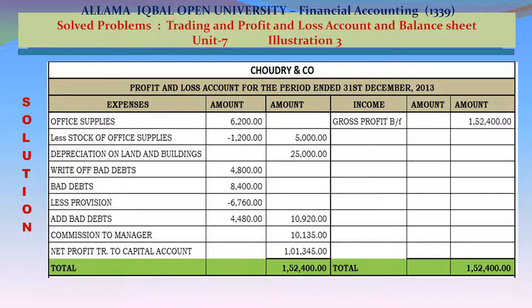Chowdhury & Company Profit and Loss Account for the period ending 31 December 2013. On the income side: Gross profit brought forward from trading account — 152,400. On the expenses side: Office supplies 6,200; less stock of office supplies 1,200; net office supplies 5,000. Depreciation on land and buildings 25,000.